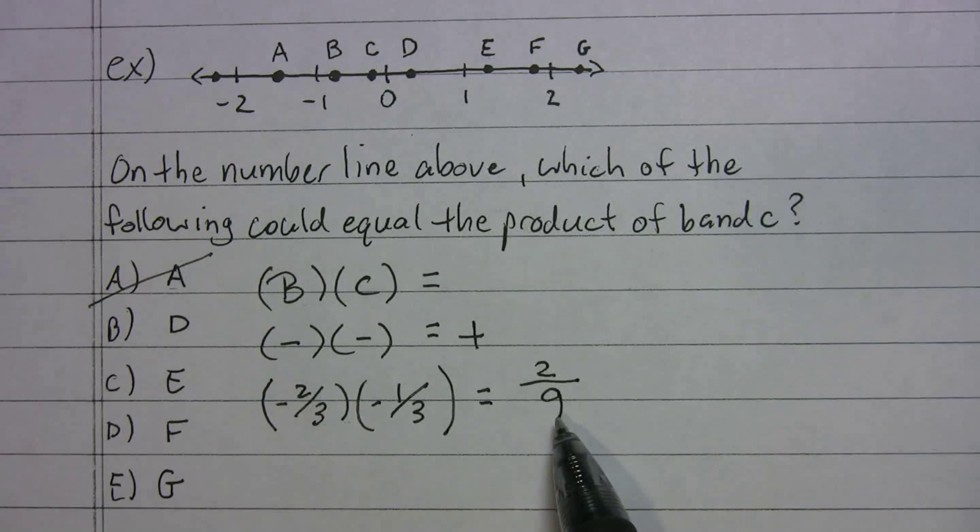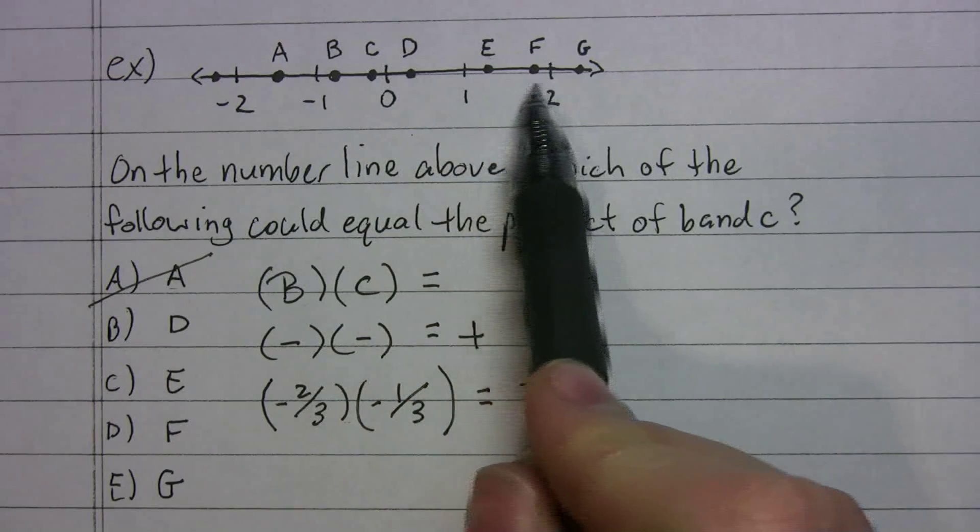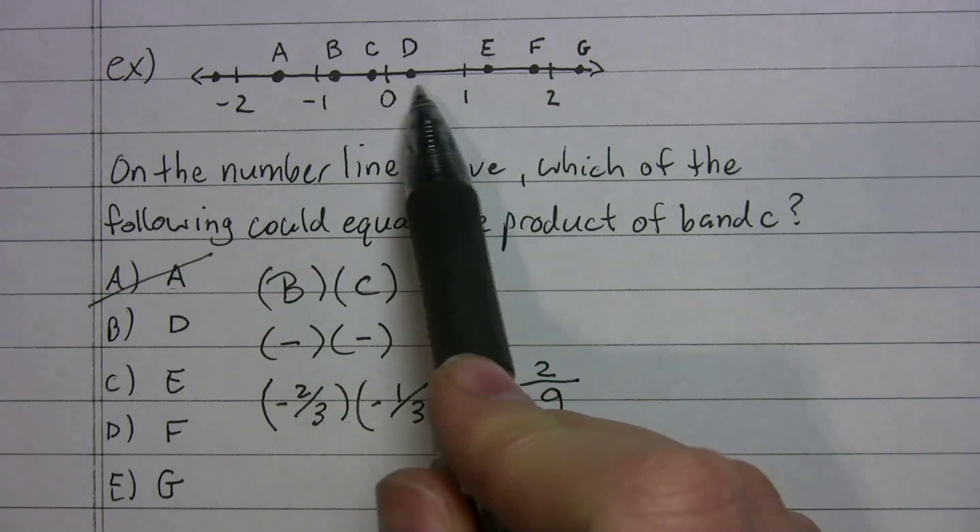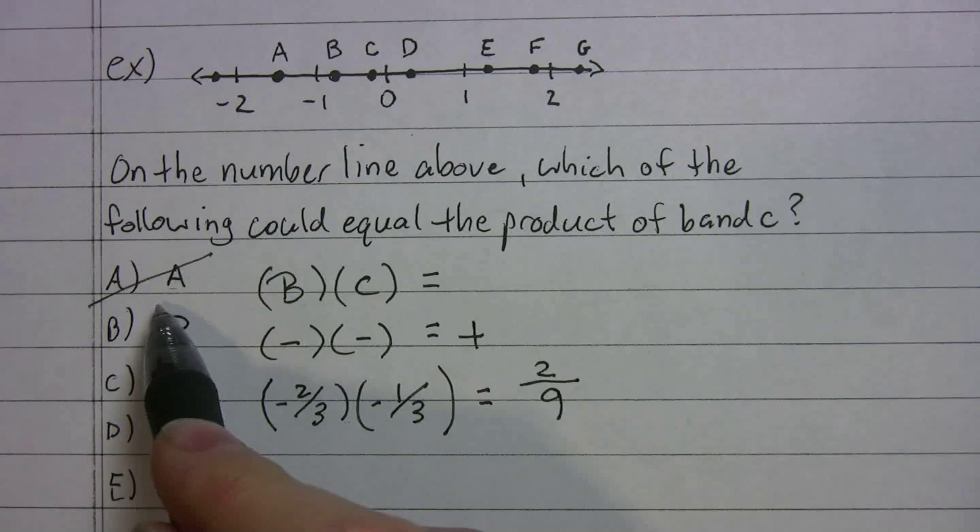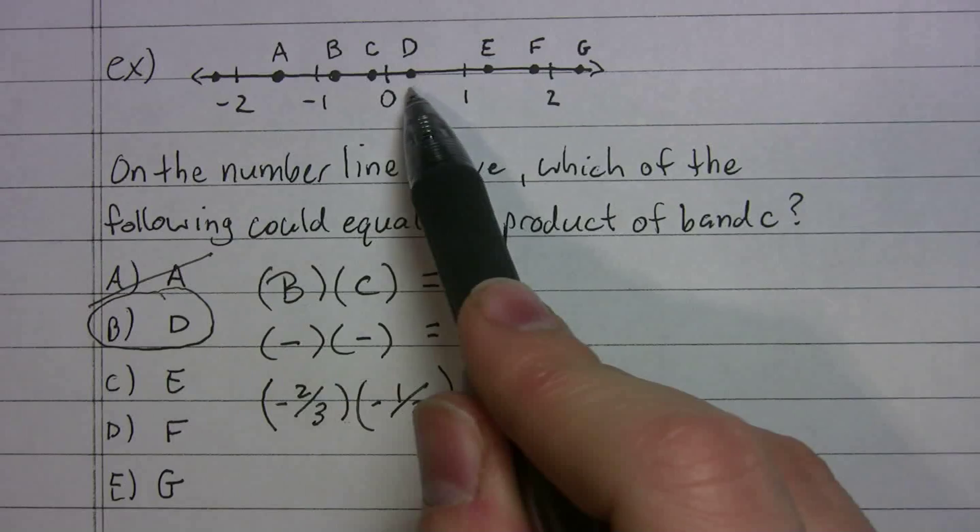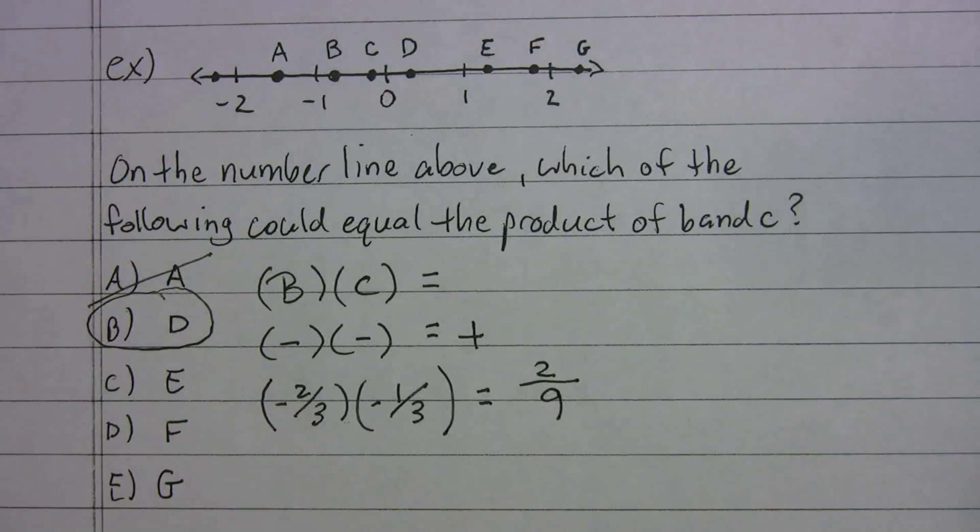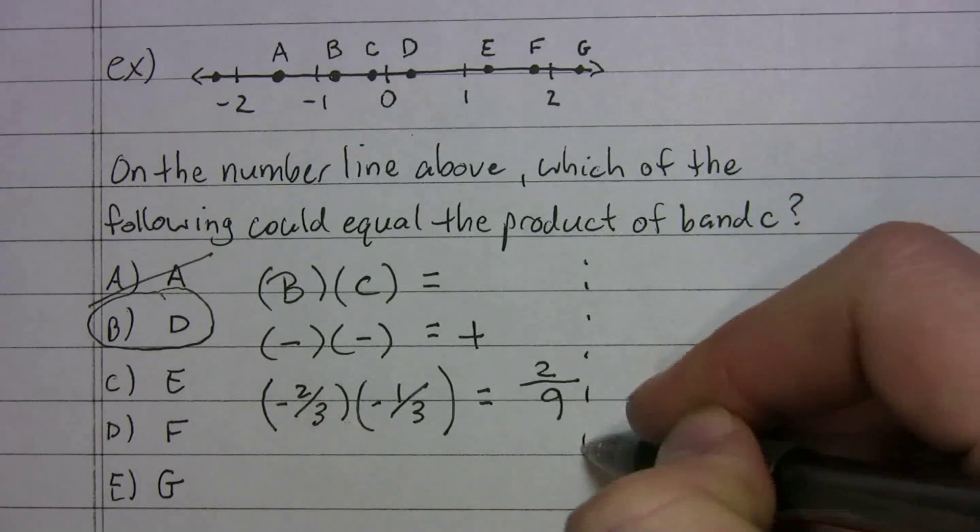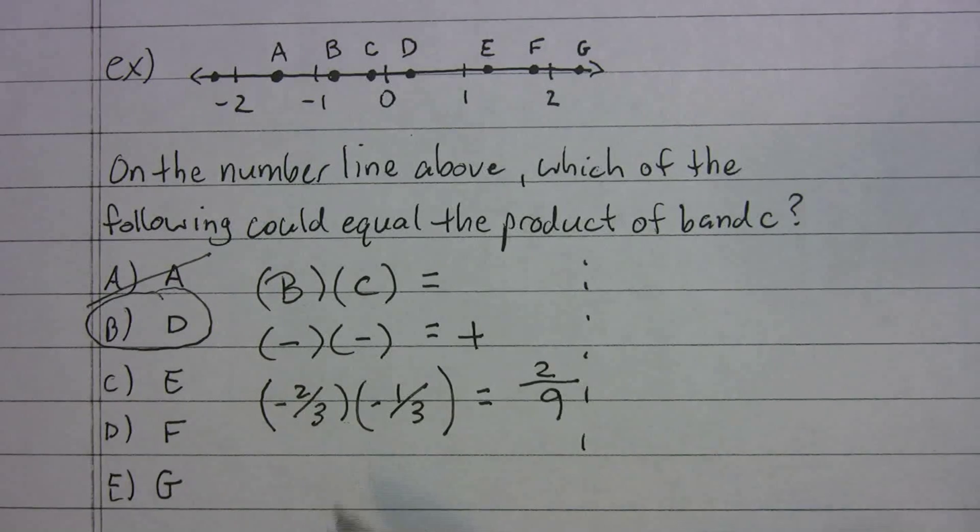So your answer is two ninths. Which one of these over here looks like two ninths? Well, your closest one is d. Choice b. Because two ninths is a fraction less than one. Here's your fraction less than one. And I think the real lesson here, I know we chose numbers to fill in for b and c, but you should know what happens when you multiply fractions less than one.